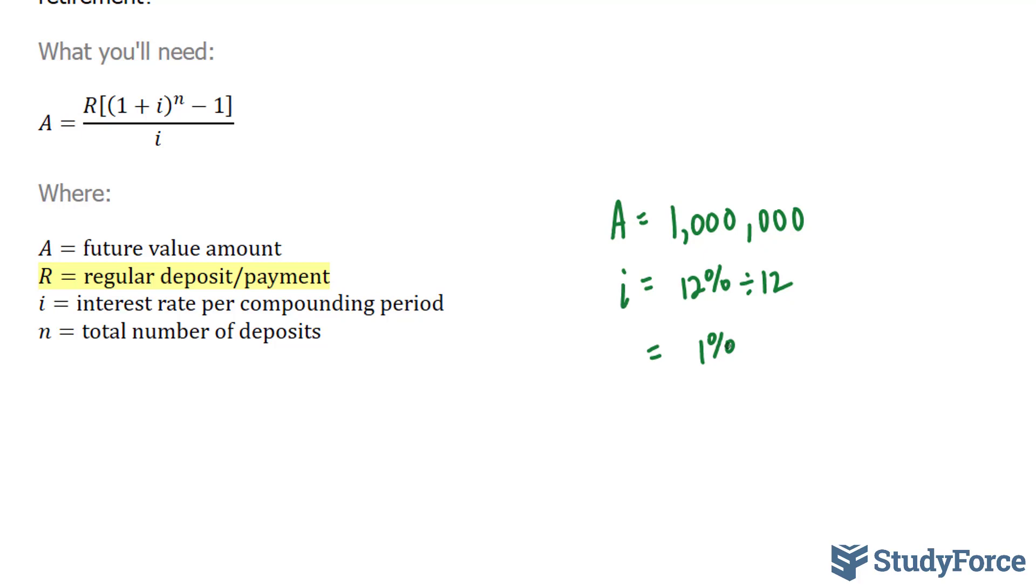Now we don't work with percentages when we solve these problems. We work with the decimal version of the number. So in our case, we would have to divide this by 100 and 1% represents 0.01 in decimals.